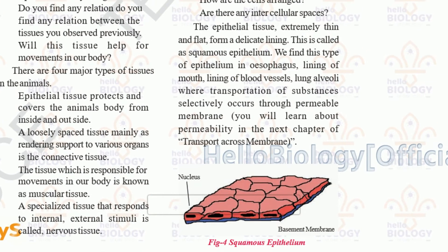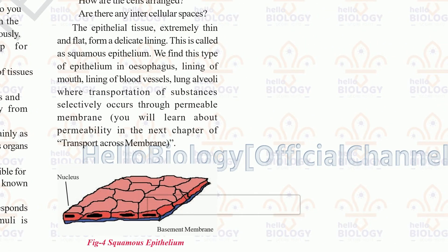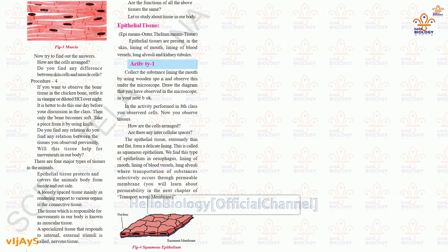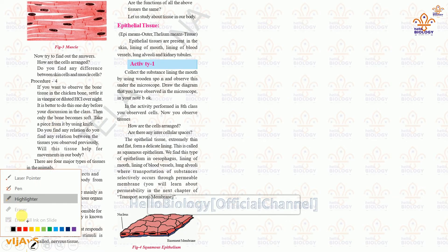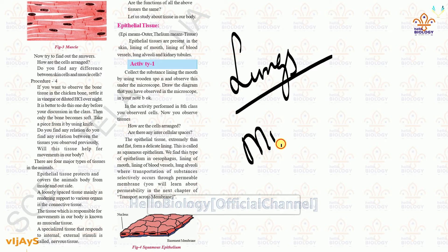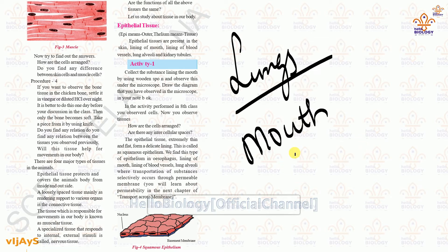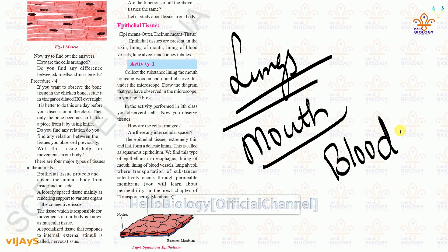Epithelial tissue — what is the use of this first tissue? This is most important in case of lining of our lungs. These three things you need to remember: our lungs, inside our mouth, and also in case of cell membranes and blood vessels — these linings will be seen.